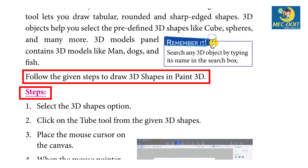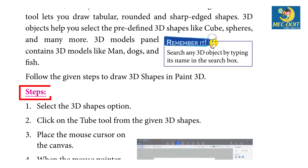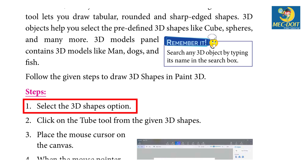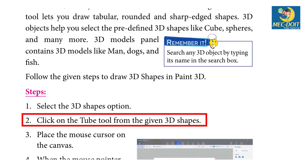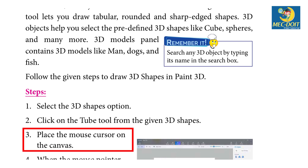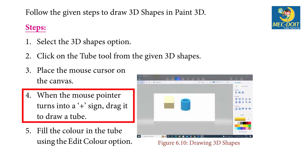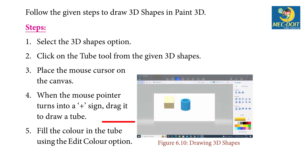Follow the given steps to draw 3D shapes in Paint 3D: Step 1 — Select the 3D Shapes option. Step 2 — Click on the Tube tool from the given 3D shapes. Step 3 — Place the mouse cursor on the canvas. Step 4 — When the mouse pointer turns into a plus sign, drag it to draw a tube. Step 5 — Fill the color in the tube using the Edit Color option.